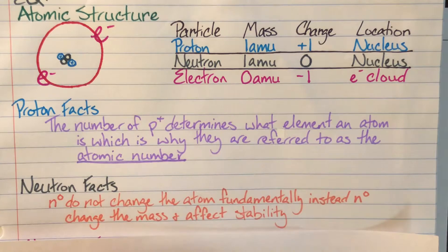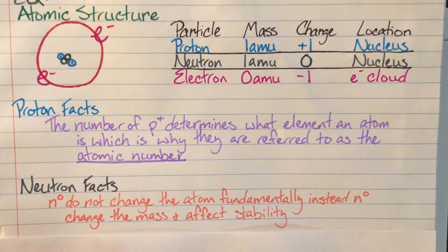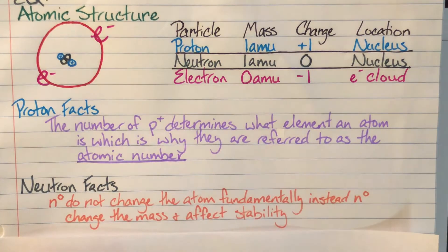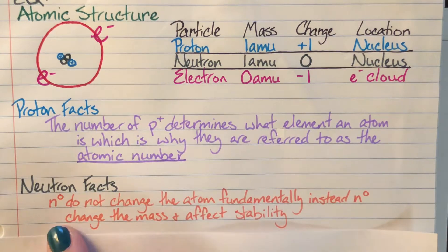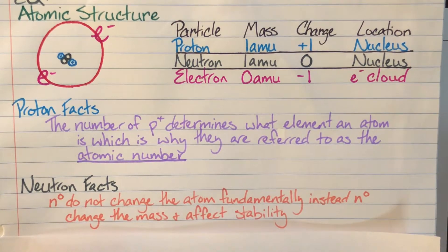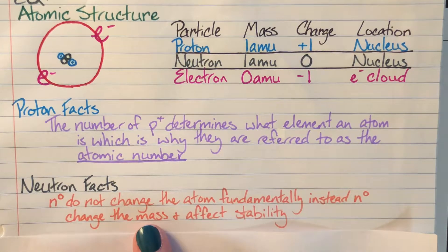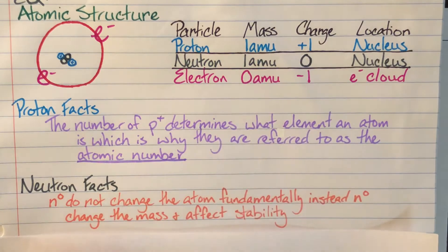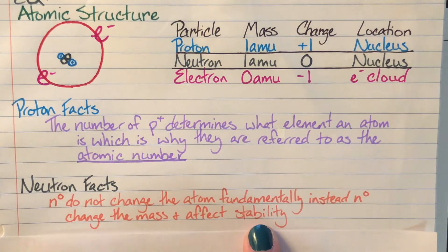Okay. So we have N-not, which means neutrons with a zero charge. Neutrons don't change who the atom is fundamentally. If I change the number of neutrons, it's still going to stay carbon if it has six or seven neutrons. That doesn't change. What it does change is the mass because neutrons have a mass. And it is also going to affect stability.